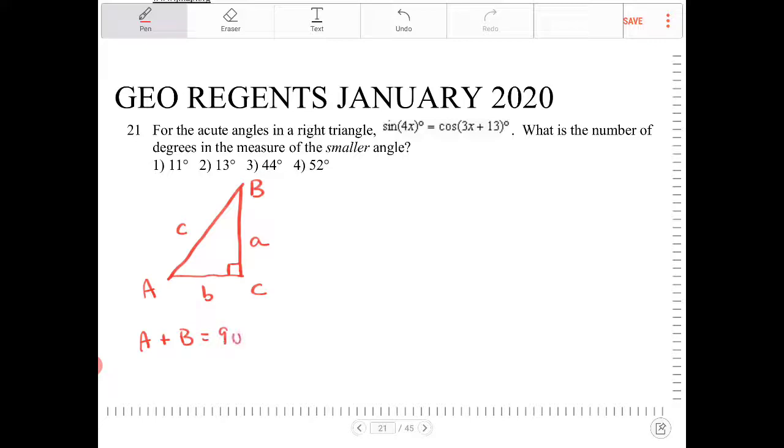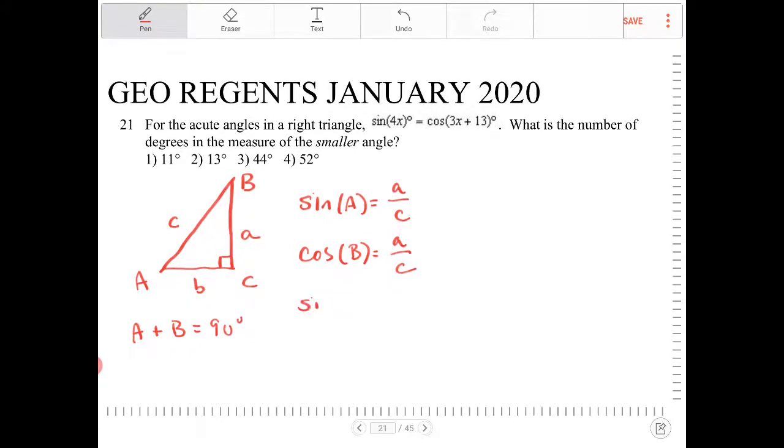If you take sine of capital A, this is going to equal lowercase a over c. And if you take cosine of B, that means this is also going to equal a over c, because opposite over adjacent. The adjacent side for angle B would be lowercase a and the hypotenuse would be c. So sine A is going to equal cosine B. In other words, these two things will equal one another if the arguments inside are complementary.